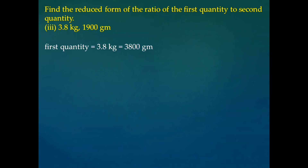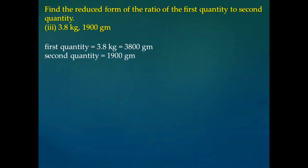So we will convert the first quantity into grams. That is, 3.8 kilograms — if we multiply it by 1000, it will be converted into grams. That is, 3.8 kilograms is equal to 3800 grams.